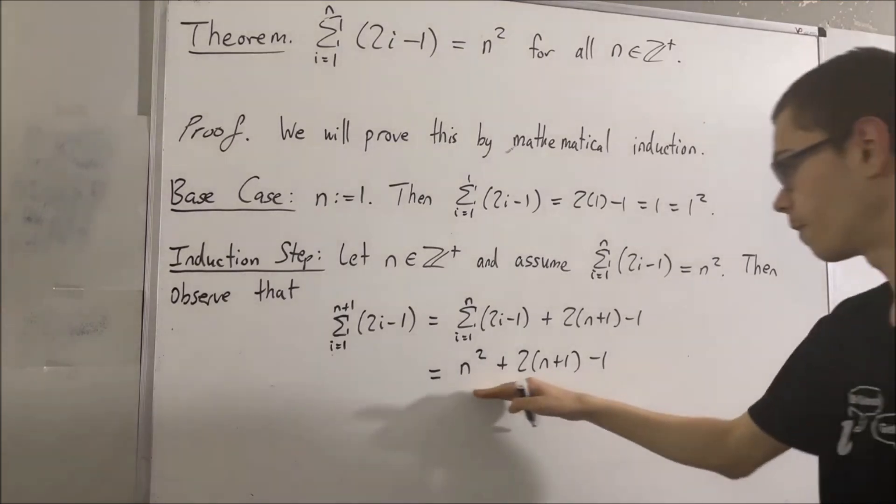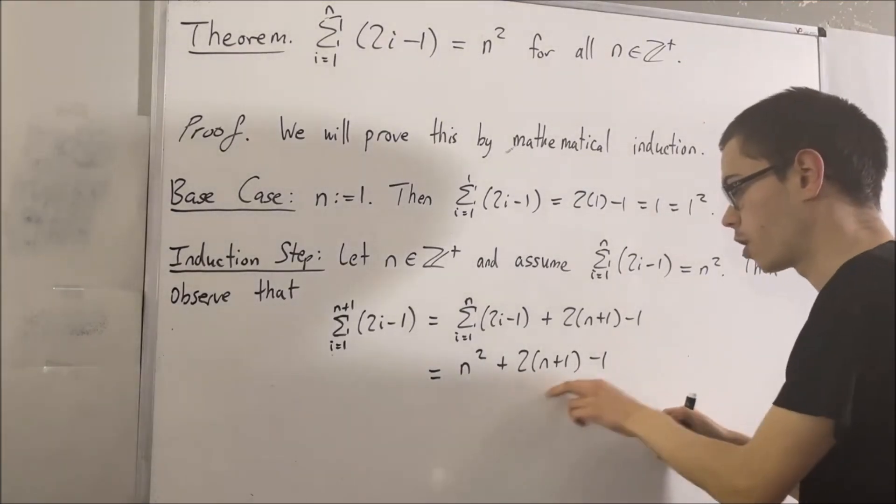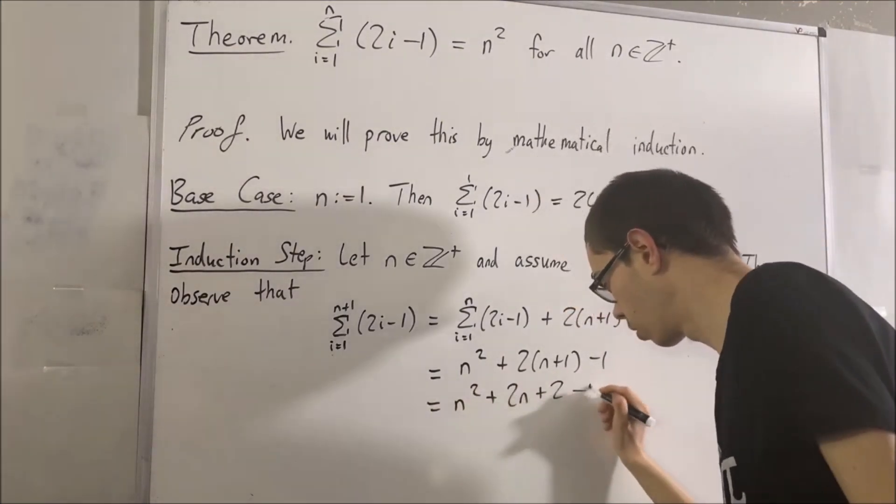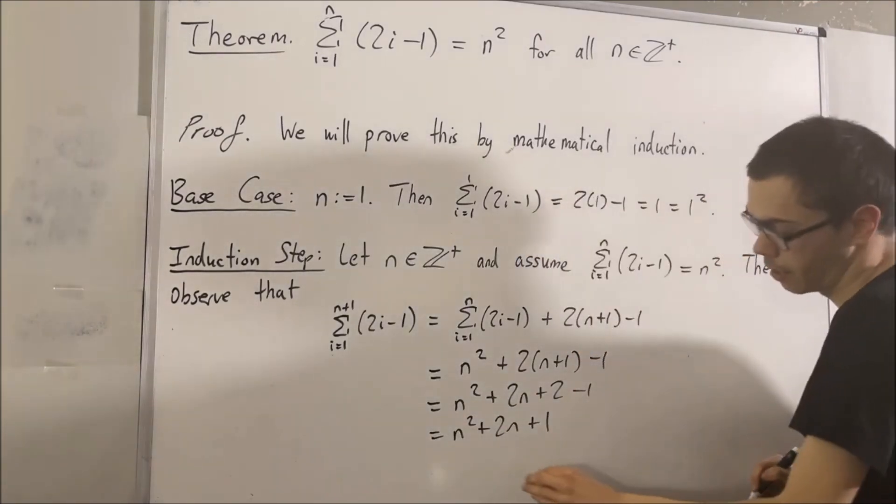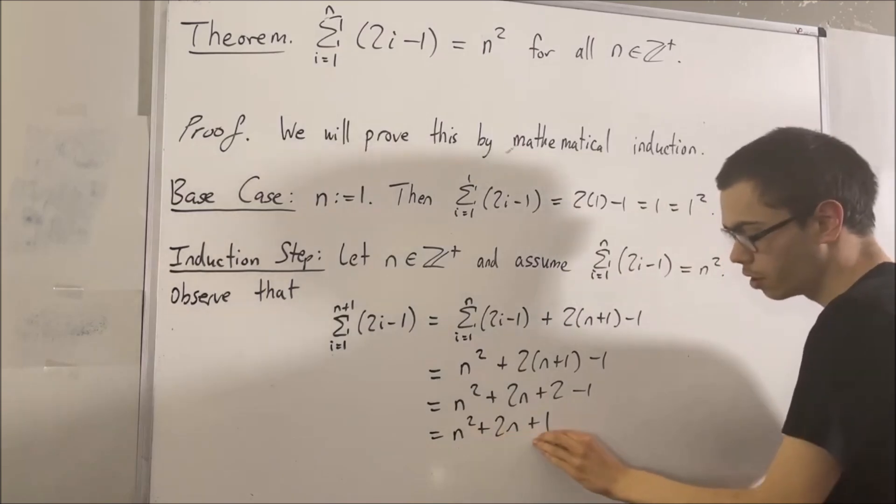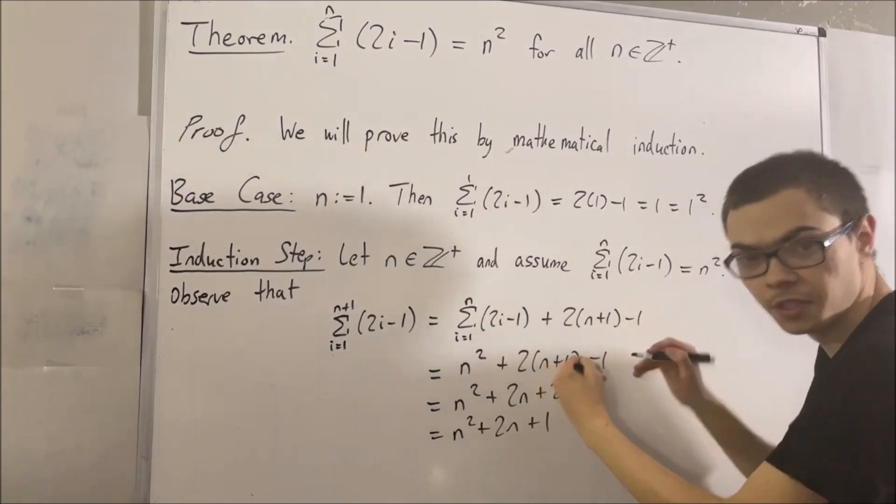Okay, now let's simplify this. If we distribute the 2 across, we get, and if we do 2 minus 1, we get 1. But then, n squared plus 2n plus 1 is really just n plus 1 squared.